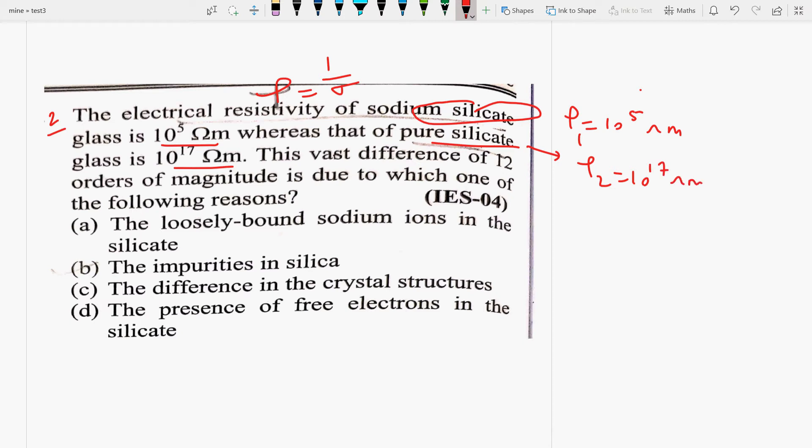So, the difference between 12 orders of magnitude, 5 plus 12 is 17, the vast difference is due to loosely bound sodium ions in the silicate, impurities in silica, difference in the crystal structures or the presence of the free electrons in the silicate. The vast difference between the order of magnitude is due to the impurities in silica.